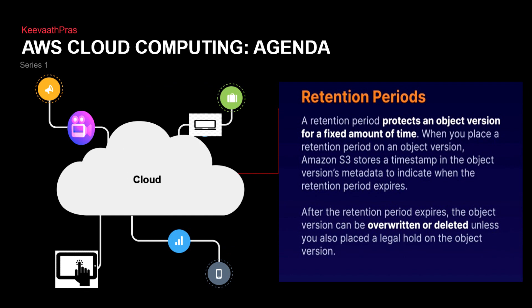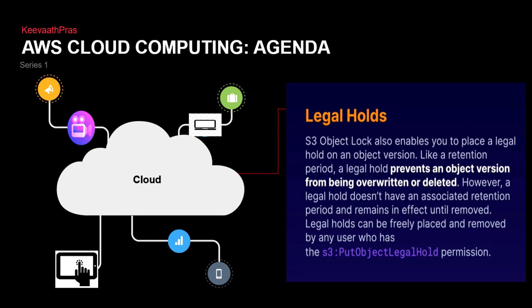Now the retention period is basically a timestamp. It says when the retention period expires and when it actually starts. You basically hold an object for a fixed amount of time — that is called the retention — and during that time you have a timestamp to say when it actually expires. After the expiry, the object versions can be overwritten or deleted, unless you have a legal hold on the object version. So during compliance and the retention period you can't do anything, but after the retention period you can do whatever unless there is a legal hold.